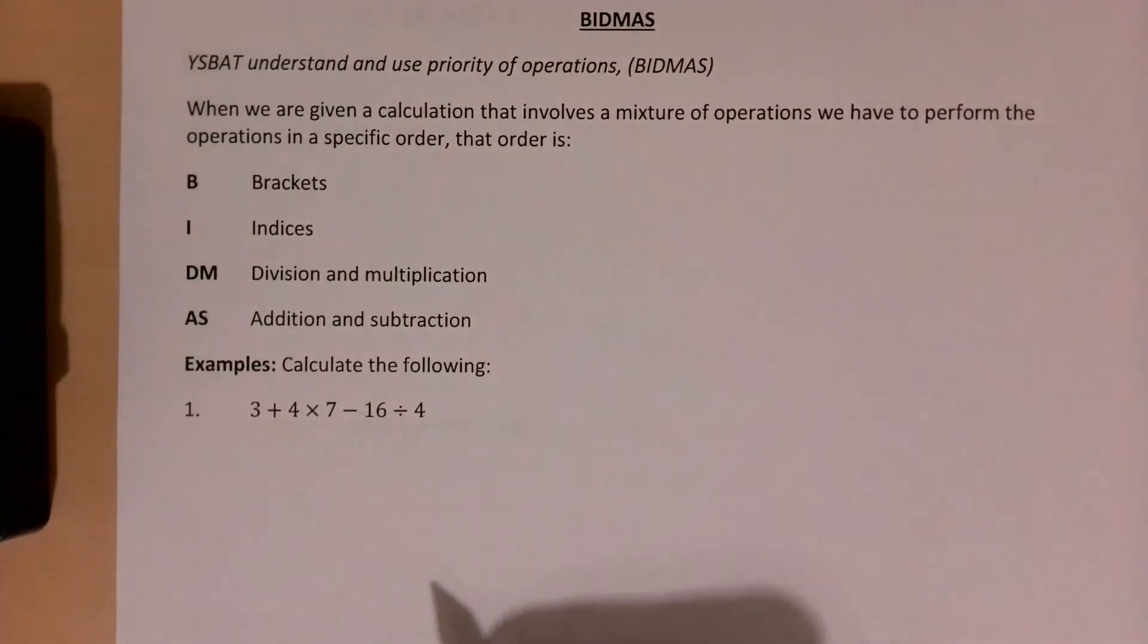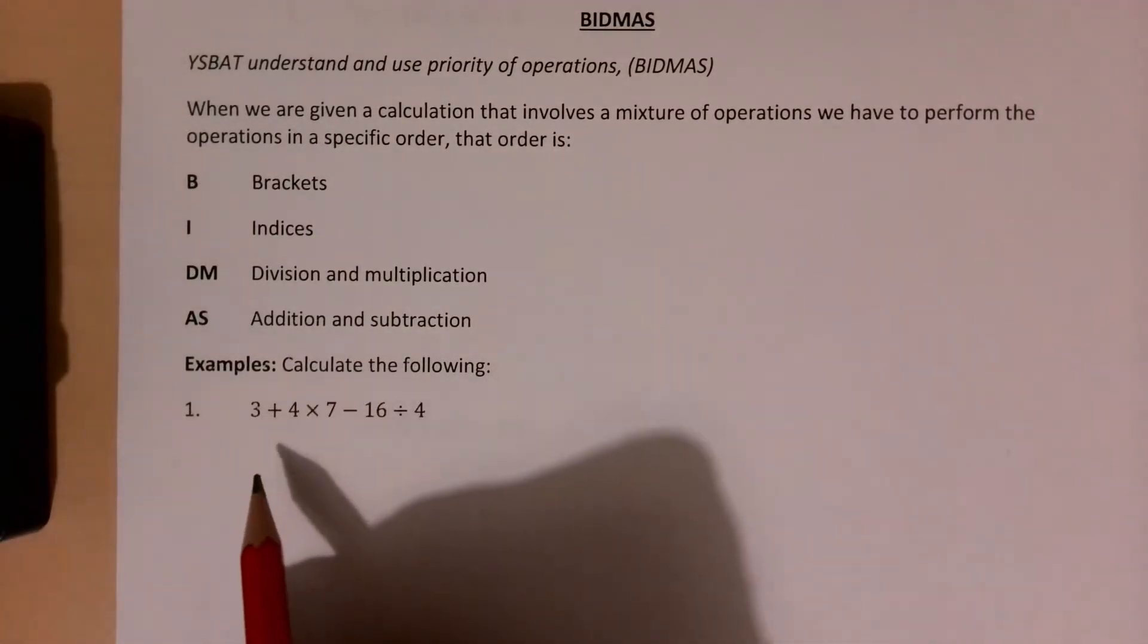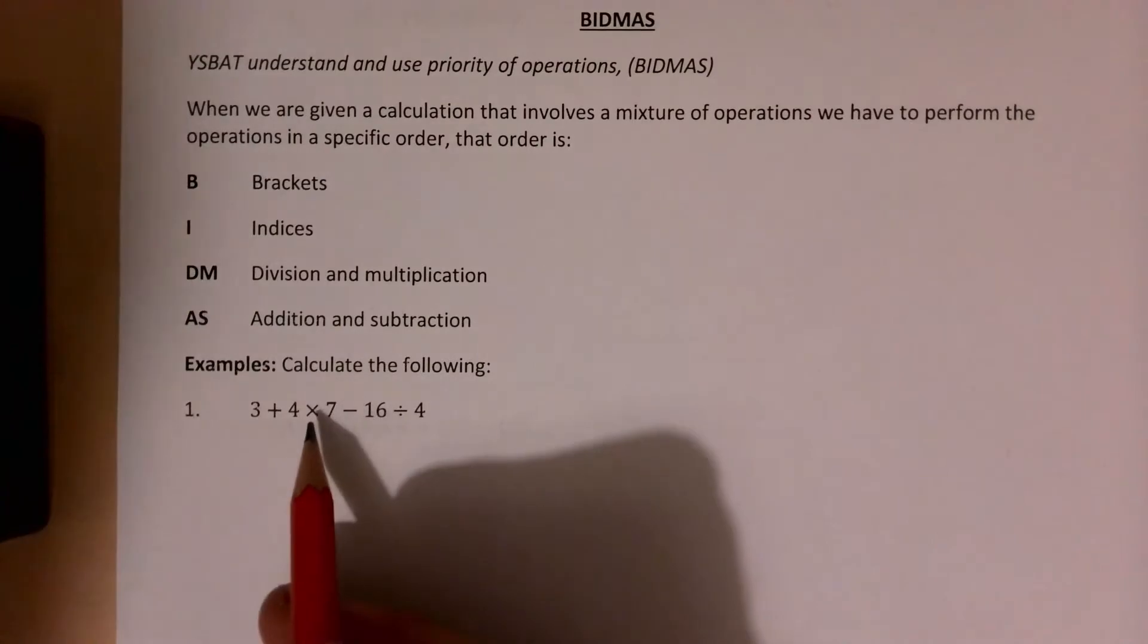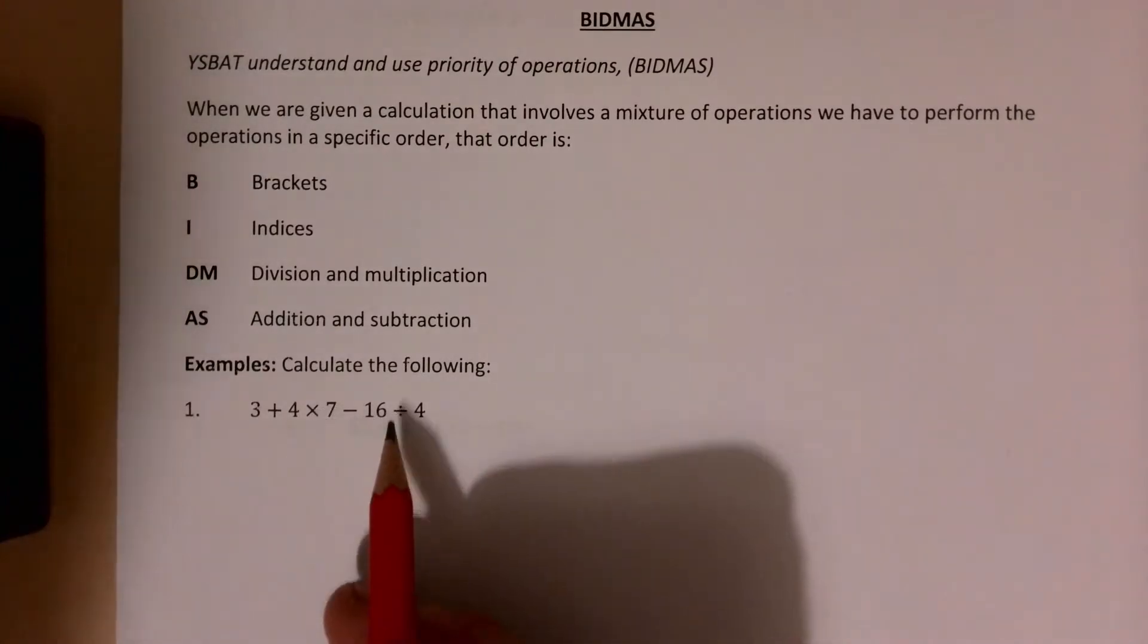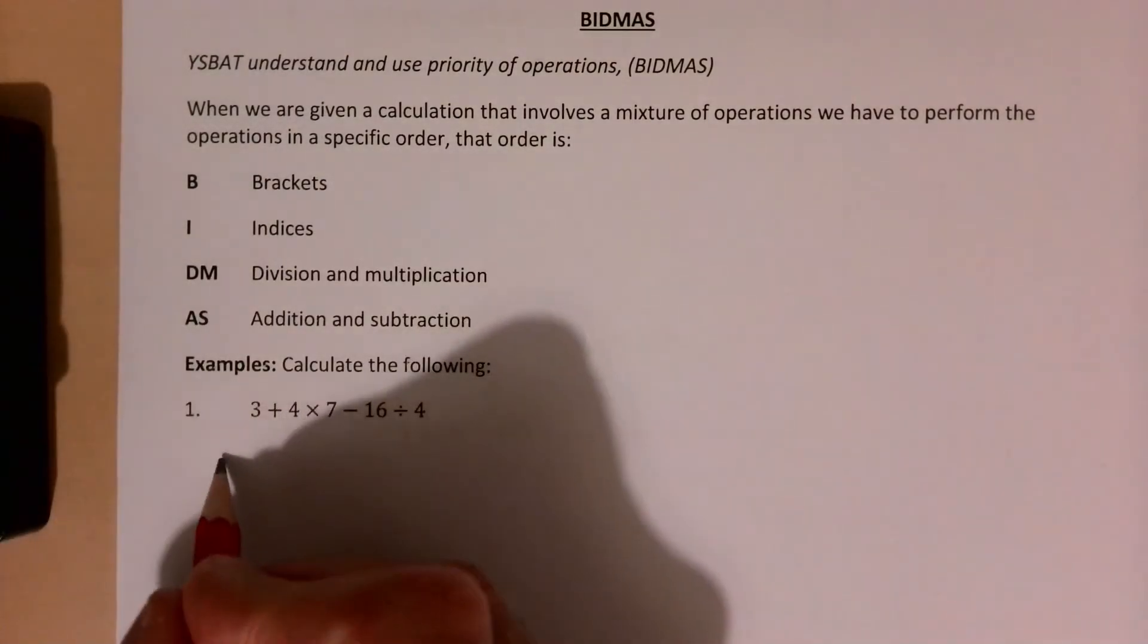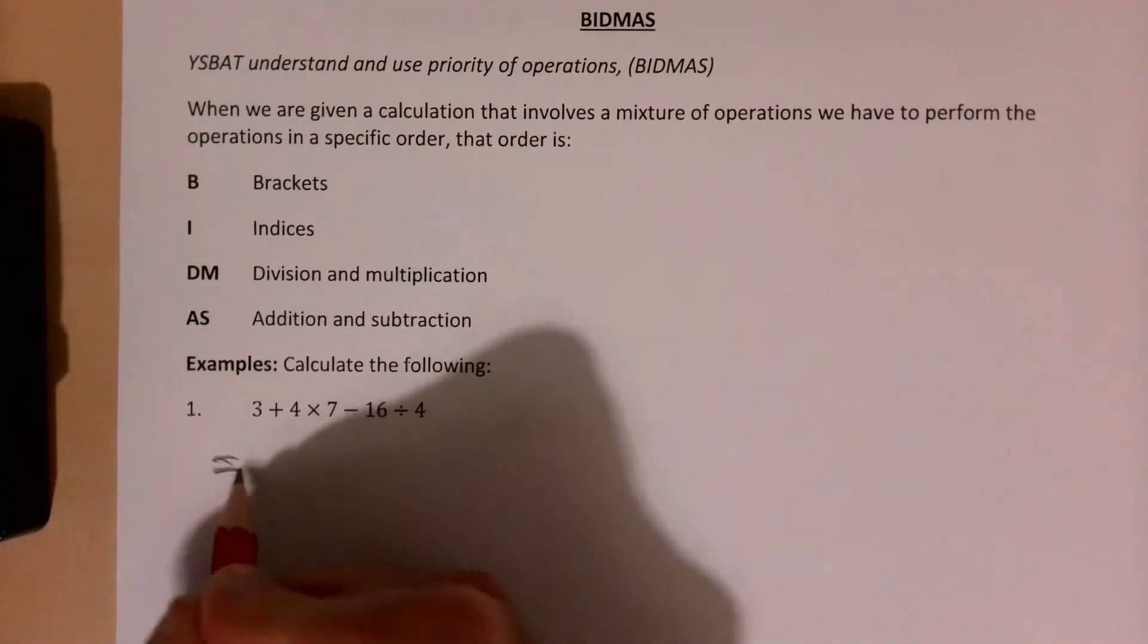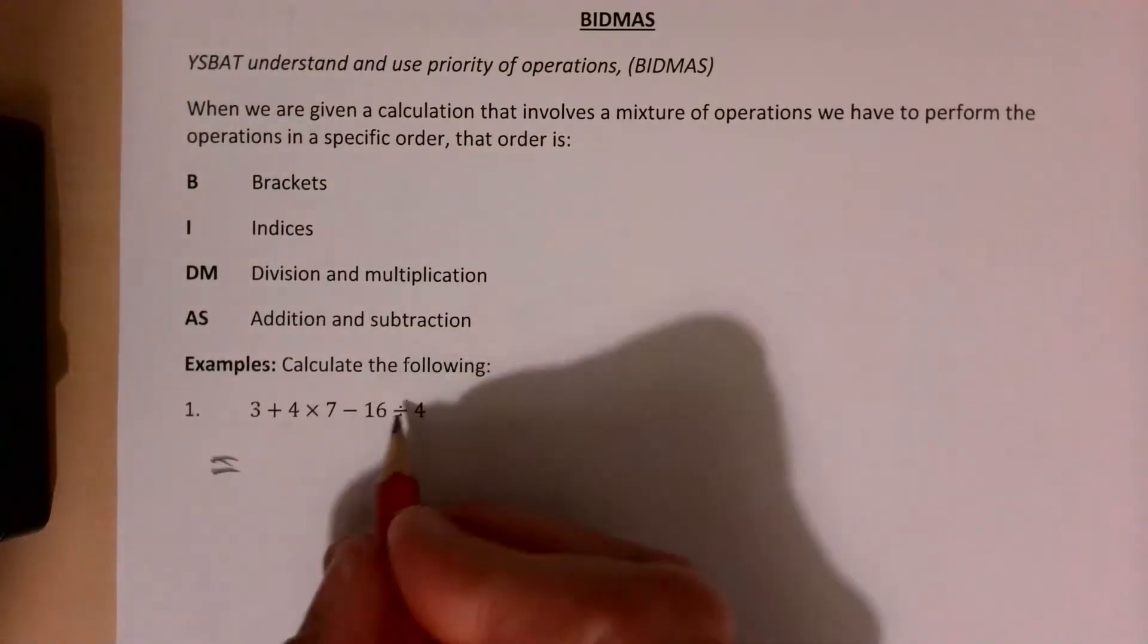So calculate the following. Here we need to do our multiplication and division first. There's no brackets, there's no indices. So my next line should say exactly the same thing having done those two operations.